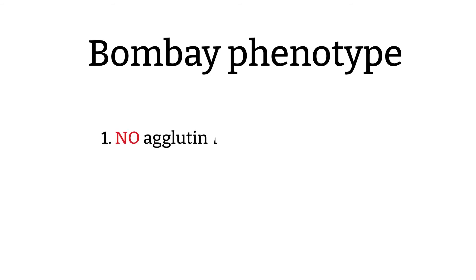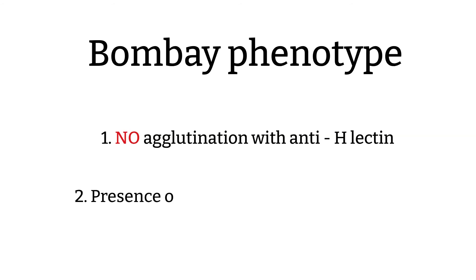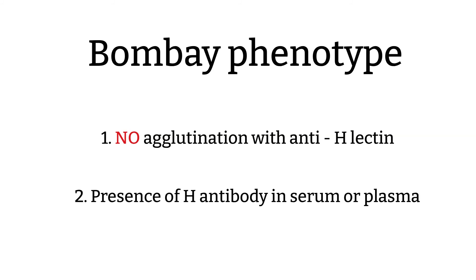In recap, we can confirm that a patient is Bombay by two criteria. First, there is no agglutination with Anti-H lectin because there are no H antigens on the RBCs. Second, the presence of anti-H antibody in the serum or plasma, which can be demonstrated by testing the patient serum or plasma with O RBCs — you will have a strong reaction to all group O RBCs, but no reaction when tested with another Bombay phenotype RBC.